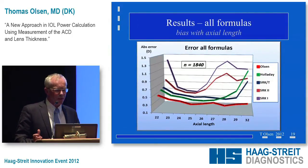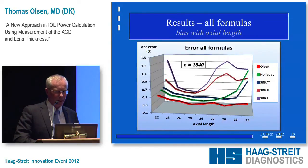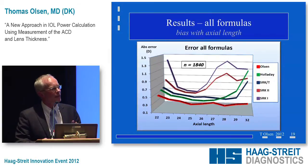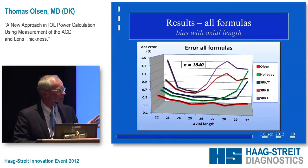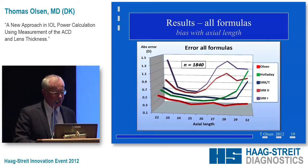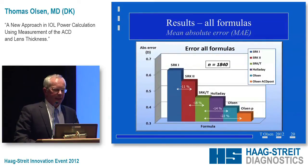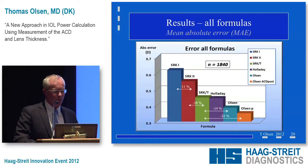Comparing the SRK1, SRK2, SRK-T, Holladay, and our approach: I don't recommend the SRK1 for even my worst friend. Our approach performs very well over the entire axial length range. Short eyes remain a challenge because measurement errors compound into larger refractive errors. Looking at mean absolute error, there is a stepwise increase in accuracy from SRK1 to SRK2, SRK-T, and Holladay — and then a 14% drop in mean absolute error with our approach.